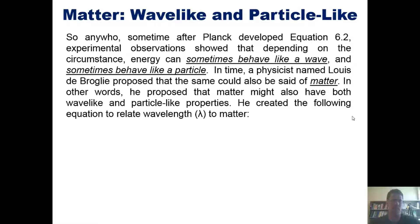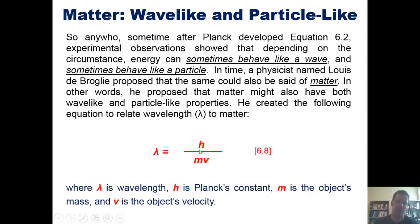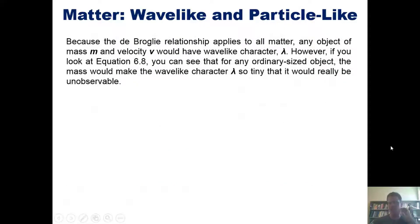So sometime after Planck developed equation 6.2, experimental observations showed that depending on the circumstance, energy can sometimes behave like a wave and sometimes behave like a particle. In time, a physicist named Louis de Broglie proposed that the same could also be said of matter. In other words, he proposed that matter might also have both wave-like and particle-like properties. He created the following equation to relate wavelength to matter: wavelength lambda equals H over MV. This H, which is actually supposed to be H-bar, is Planck's constant. M is the object's mass and V is the object's velocity. This is equation 6.8 from our text.